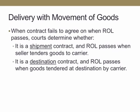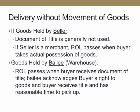When the contract fails to agree on when risk of loss passes, the courts determine whether it is a shipment contract. If it is, risk of loss passes when the seller tenders goods to the carrier. And if it's a destination contract, risk of loss passes when the goods are tendered at the destination by the carrier. In a situation involving delivery without movement of goods, if the goods are held by the seller, then the document of title is generally not used. If the seller is a merchant, then the risk of loss passes when the buyer takes actual possession of the goods.